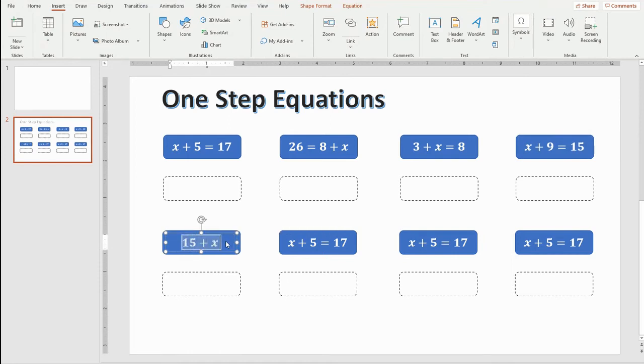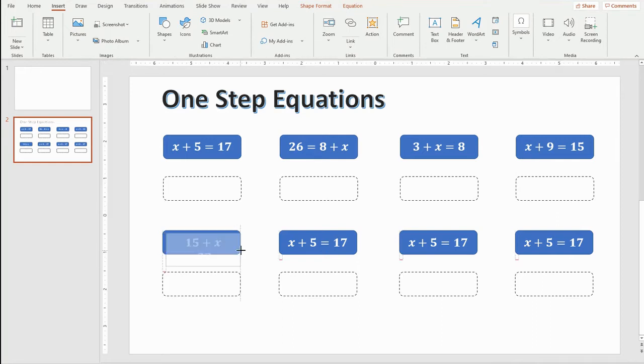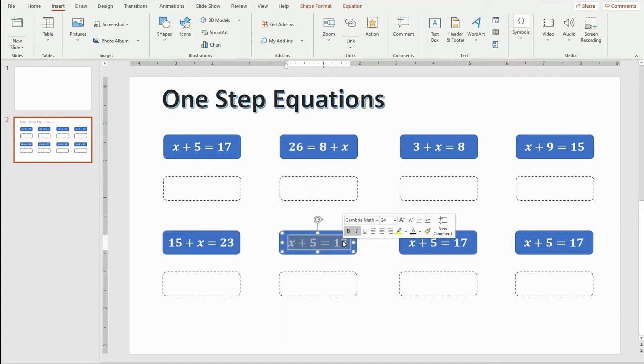We can go 15 plus x equals 23, and I can stretch it out if it doesn't, I can adjust that'll be great. And then next I will have a negative, let's try a negative 15 plus x equals 13. Excuse me, let's do a negative 9. Once again I can adjust.